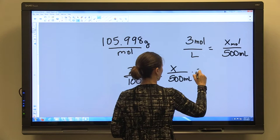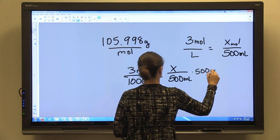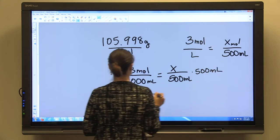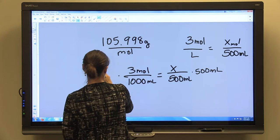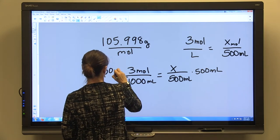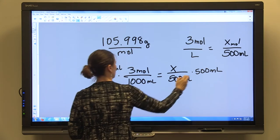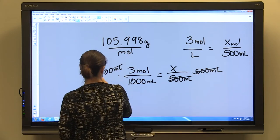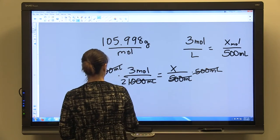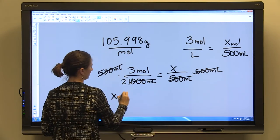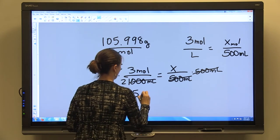And again, multiply both sides by 500 ml. Those cancel. And what you're going to get is x equals 1.5 moles.